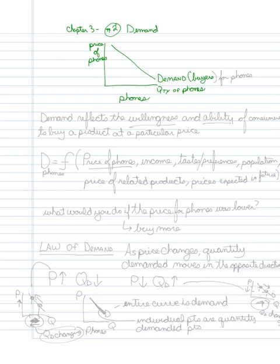And the demand curve, which again reflects the buyer, so this is going to be the buyers of the product, the demand for phones. And with only one exception, it is almost always downward sloping. So this is how it looks, downward sloping with respect to P and Q.